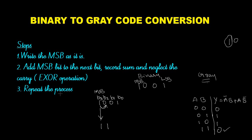Third step: repeat this process. Next we perform XOR between B2 and B1: 0 XOR 0 = 0. Next, 0 XOR 1 = 1. So my grey code output, the converted grey code value corresponding to binary 1 0 0 1, is 1 1 0 1. This is the converted grey code, and this is the process for binary to grey code conversion.